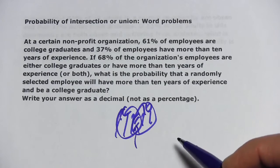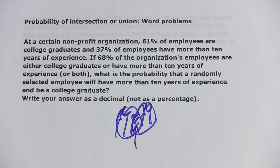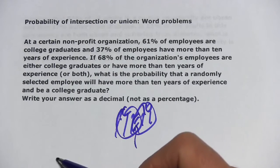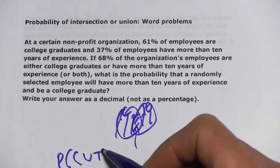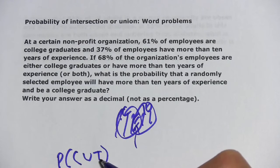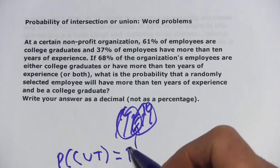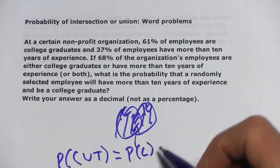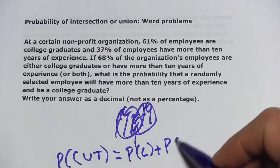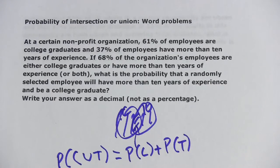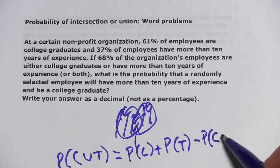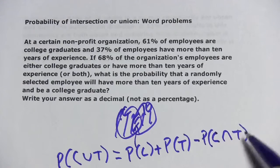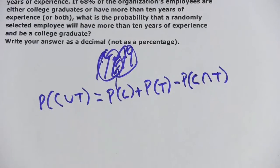There's a handy formula that's going to help us out — it's called the addition formula of probability. It states that the probability of the union of two things, such as college graduates and 10 years of experience, is the probability of the first thing plus the probability of the second thing, minus the probability of the intersection. We write the intersection with an upside-down U.